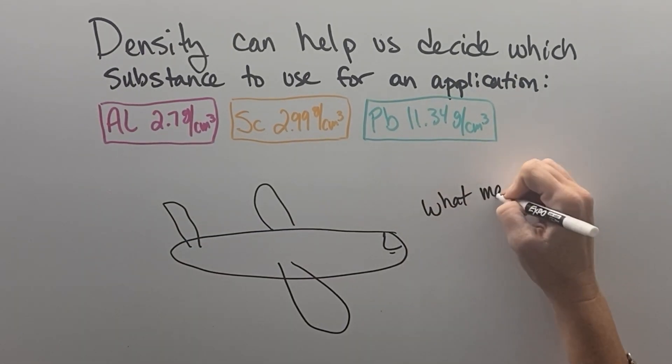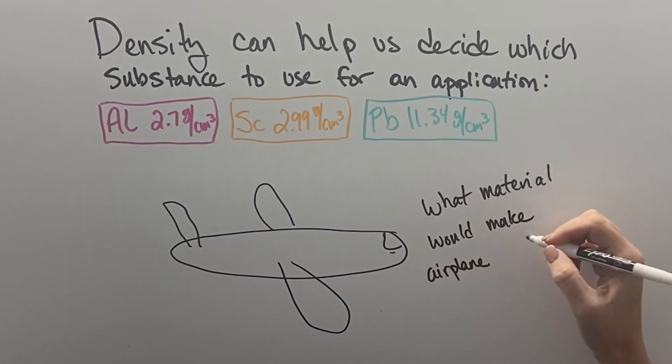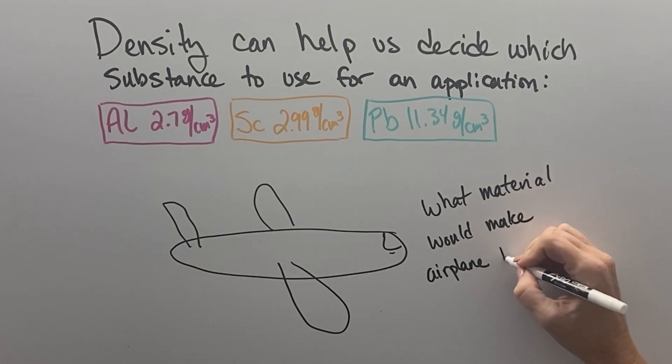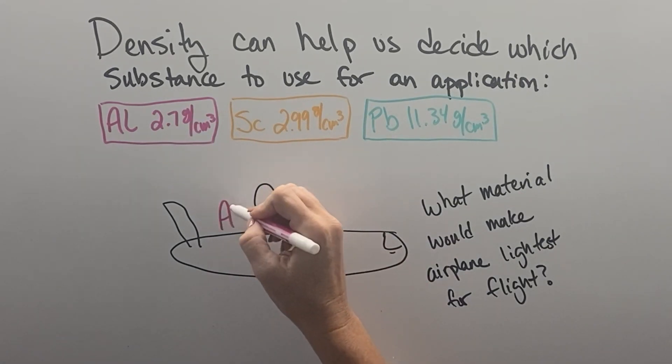To make getting that plane up in the air as easy as possible, you're going to want to choose a substance like aluminum to build your plane out of, because it has a low gram per centimeter measurement.